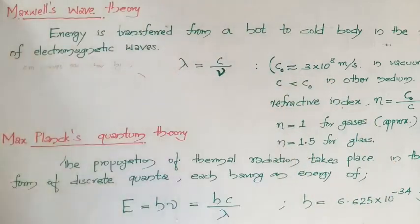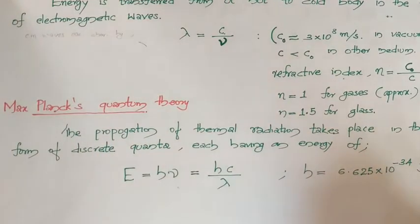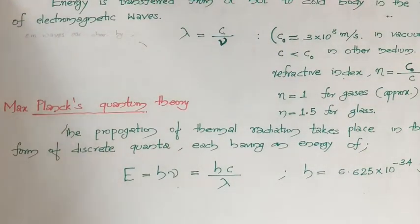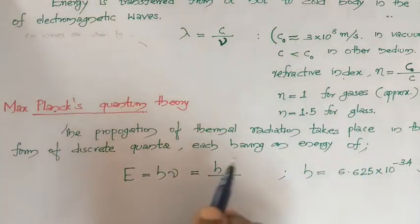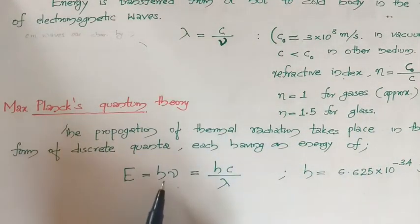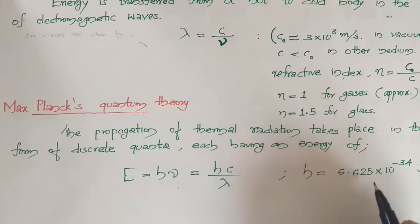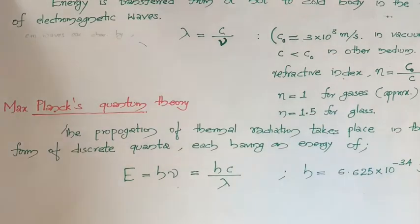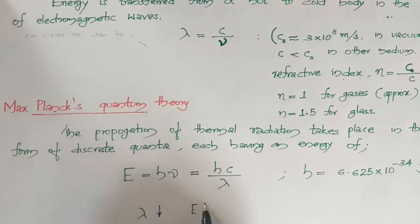Another theory used is Max Planck's quantum theory. According to this, the propagation of thermal radiation takes place in the form of packets of energy called quanta, each having energy given by E = hν = hc/λ, where h is Planck's constant, 6.6×10⁻³⁴ joule-seconds. From this equation, waves with lower wavelengths have higher energy, meaning radiation with lower wavelength is more destructive in nature.